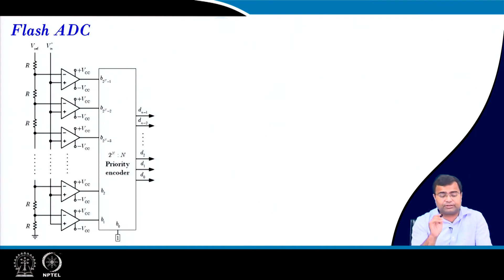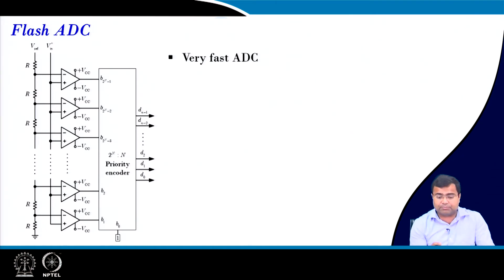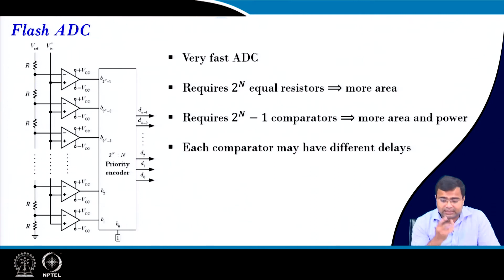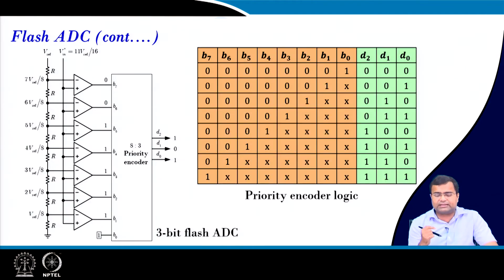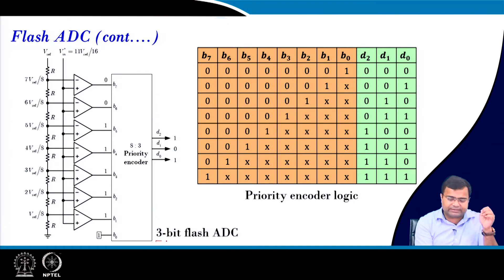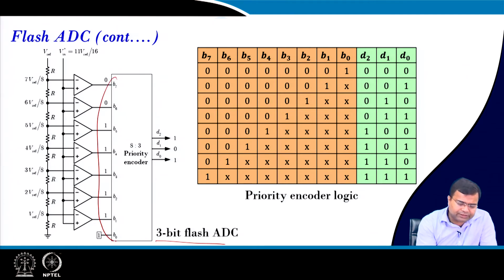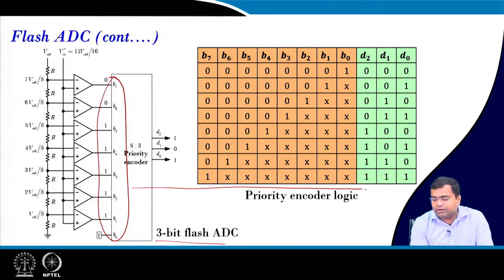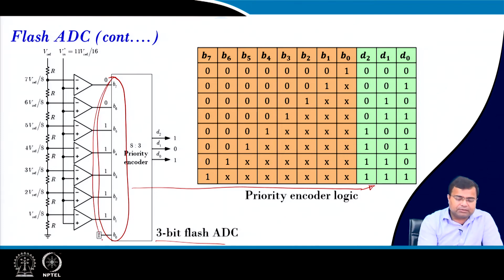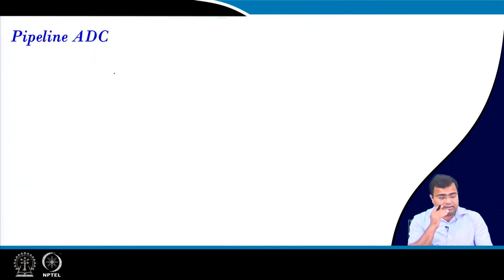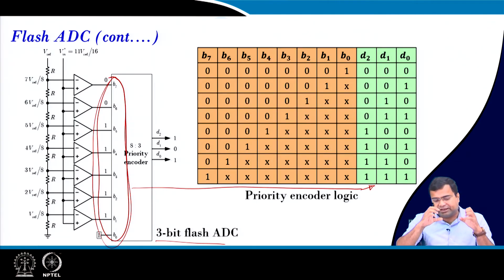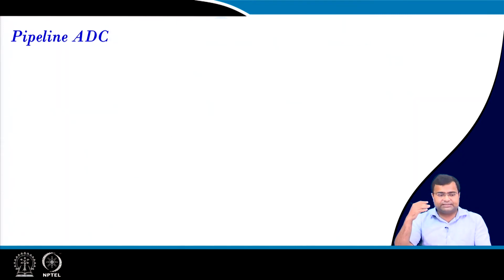The next is the parallel flash ADC. For any n-bit flash ADC, we need 2^n minus 1 comparators, and each comparator may have a different time delay, which can cause issues. For a 3-bit flash ADC we need 7 comparators. After all the comparator outputs, we use a priority encoder to convert them to a binary number. One major limitation of flash ADC is the large number of comparators required — for 6 bits we would need 63.